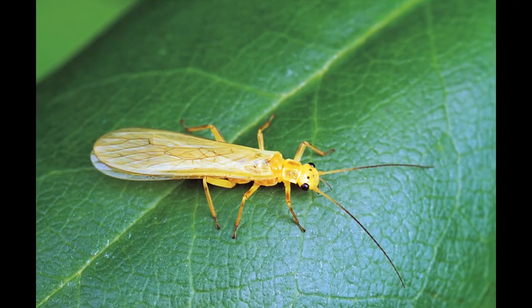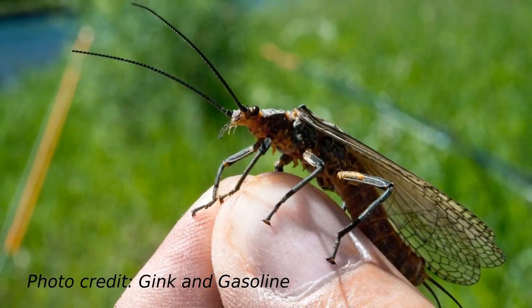And our yellow sally is a fairly small bug, I think maybe size 12 to 16. But this technique and this style, you can use it for all kinds of patterns. If you fish the big western rivers, maybe you're tying this thing in as big as a six or eight. Or if you fish the eastern tailwaters, maybe down to an 18. So it's a pretty versatile pattern. And this technique, well, it's a good one to have in your bag of tricks.